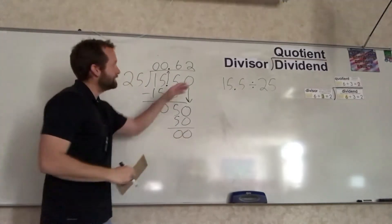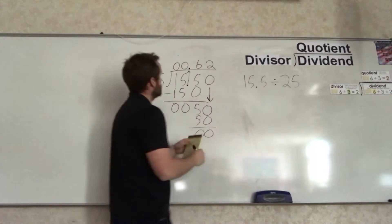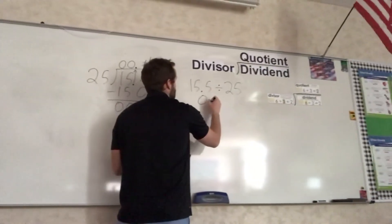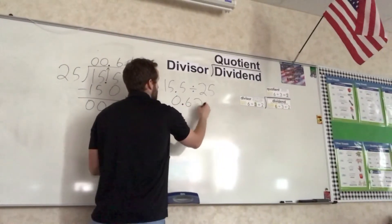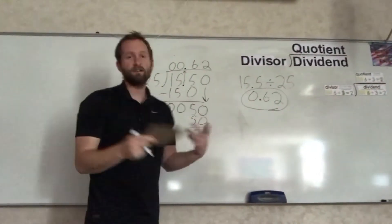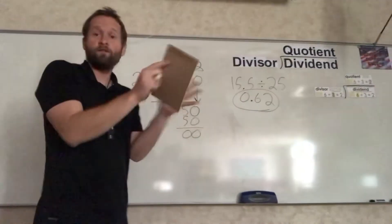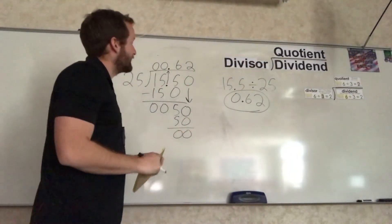So 15.5 divided by 25 equals 0.62. There we go. We have a decimal in the dividend. The divisor is still a whole number, but now the divisor is bigger. It has a greater value than the dividend.